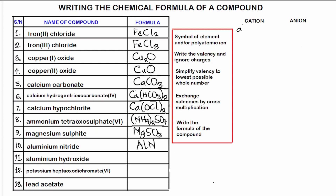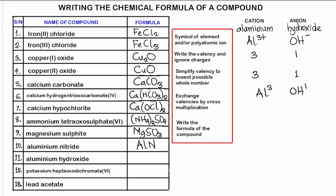Number eleven: aluminum hydroxide. Aluminum is Al³⁺ and hydroxide ion is OH⁻. The valency of aluminum is 3 and hydroxide is 1. We cannot simplify 3:1. Cross-multiplying gives Al(OH)₃ — the chemical formula for aluminum hydroxide.